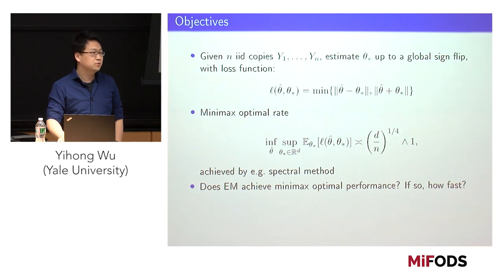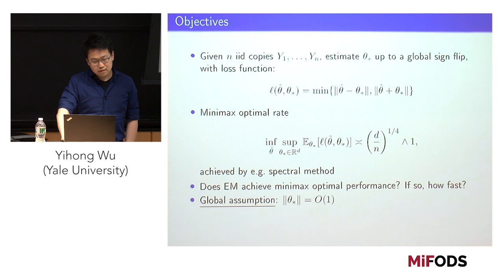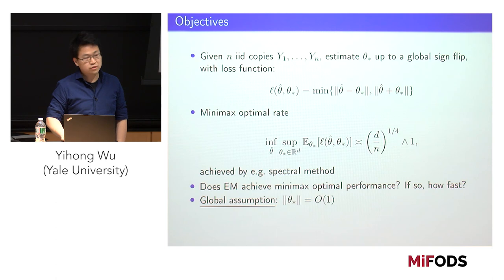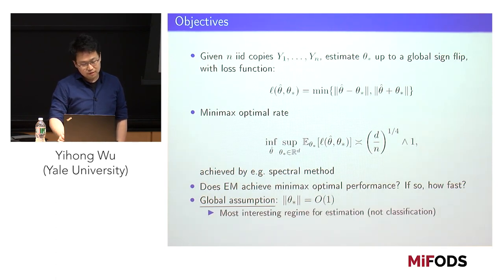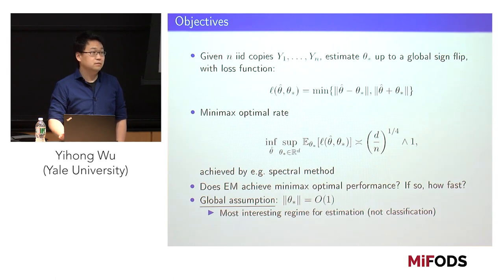After all, EM is designed to approximate maximum likelihood. If so, how many iterations are needed? The global assumption I'll make is that the center lives in a bounded ball. This assumption doesn't change the optimal rate, and is essentially the most interesting case for parameter estimation as opposed to clustering. Of course, if you want to cluster — to identify most labels correctly — you need the centers to be quite separated, but for estimation it's not needed.